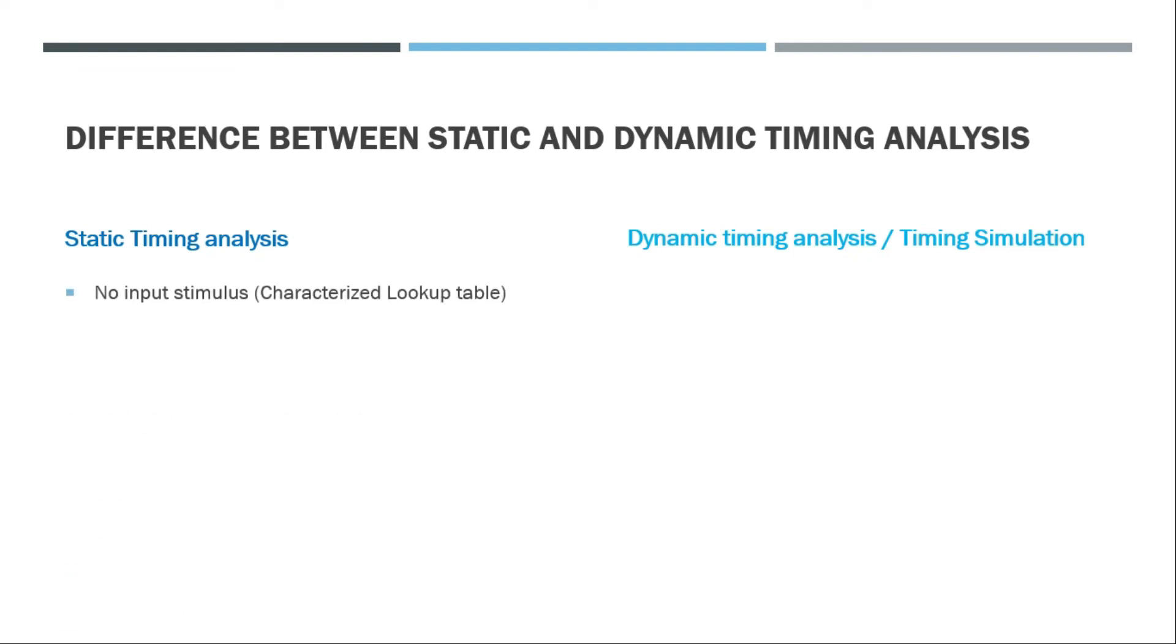The first difference is that static timing analysis does not take any input stimulus for cell delay. It takes the data from characterized lookup tables which are present in the .lib or .liberty files which come from the vendor, whoever we are buying the standard cell library from.